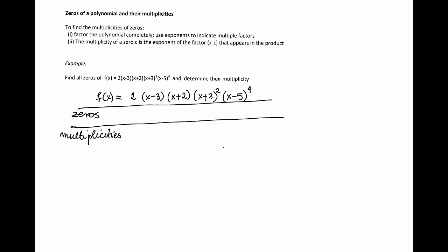if x minus c appears in the factorization, then c is the zero, and the exponent of that factor x minus c indicates the multiplicity.